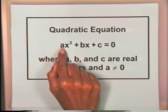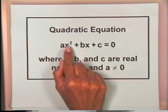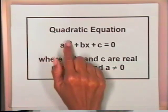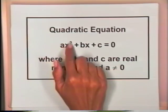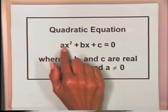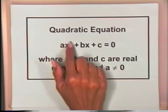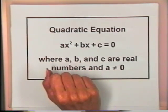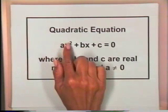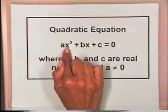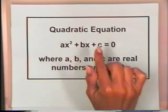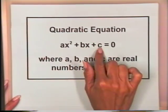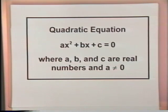If a equals 0, then this first term would be 0 times x squared, which would equal 0, meaning we would not have an x squared term — we would not have the quadratic term. We know that for an equation to be a quadratic equation, it must have the x squared term. It may also have the bx or linear term and a constant term.